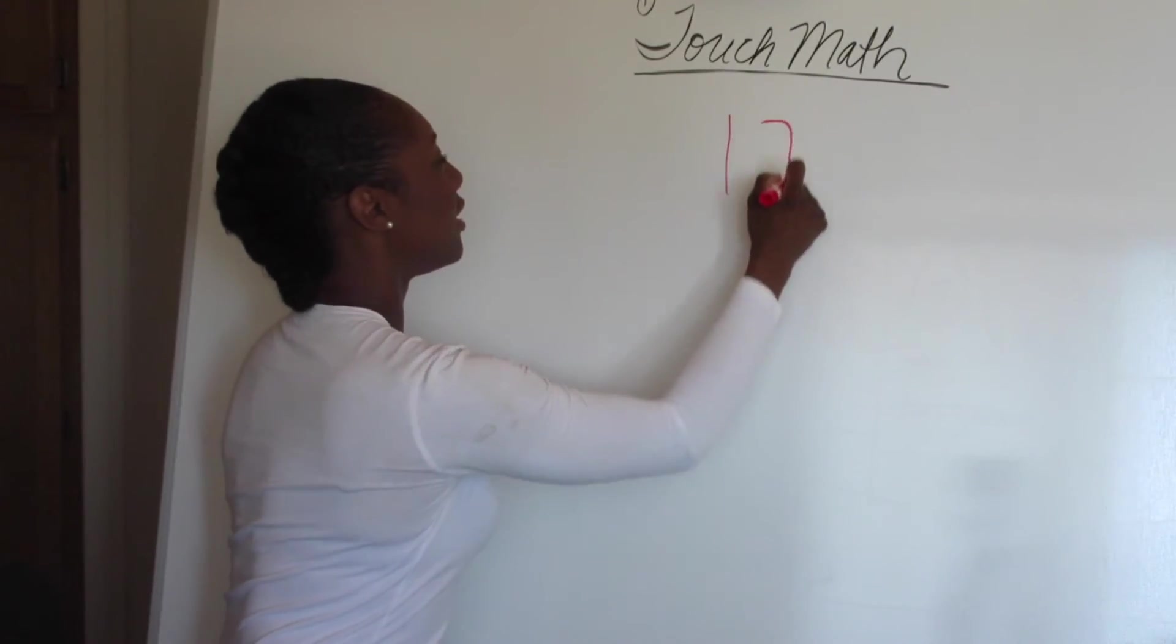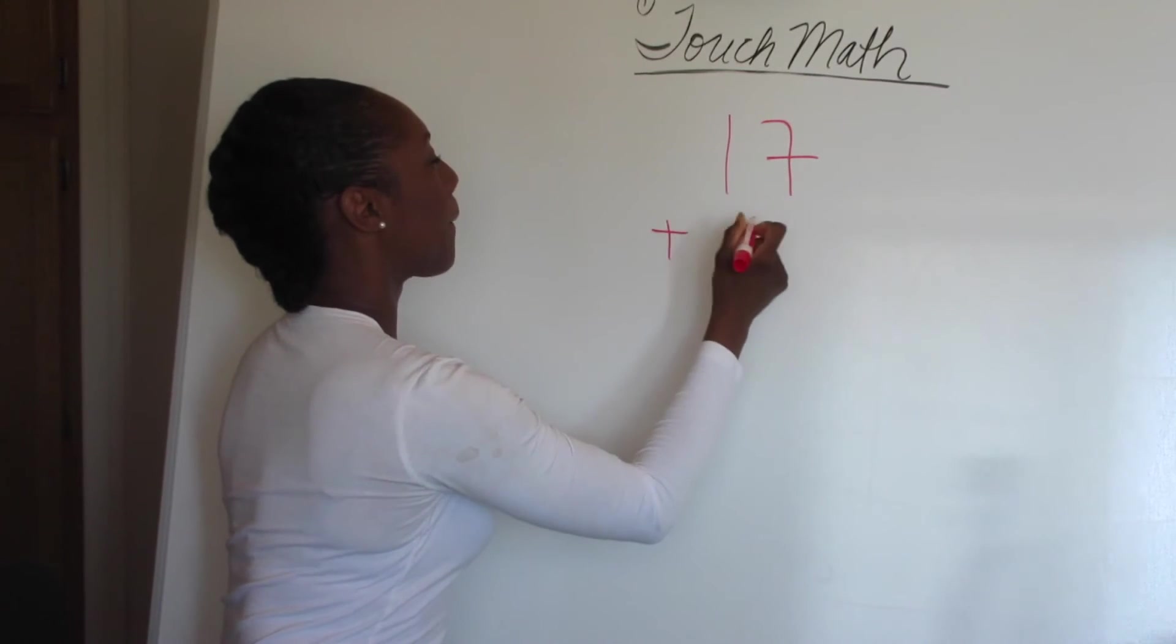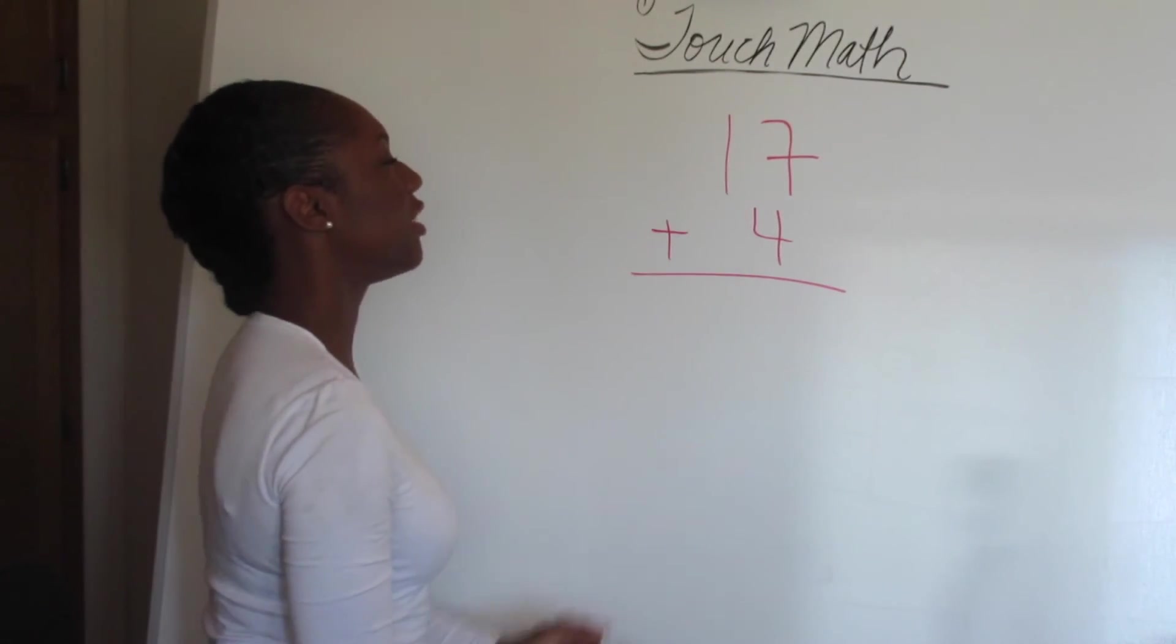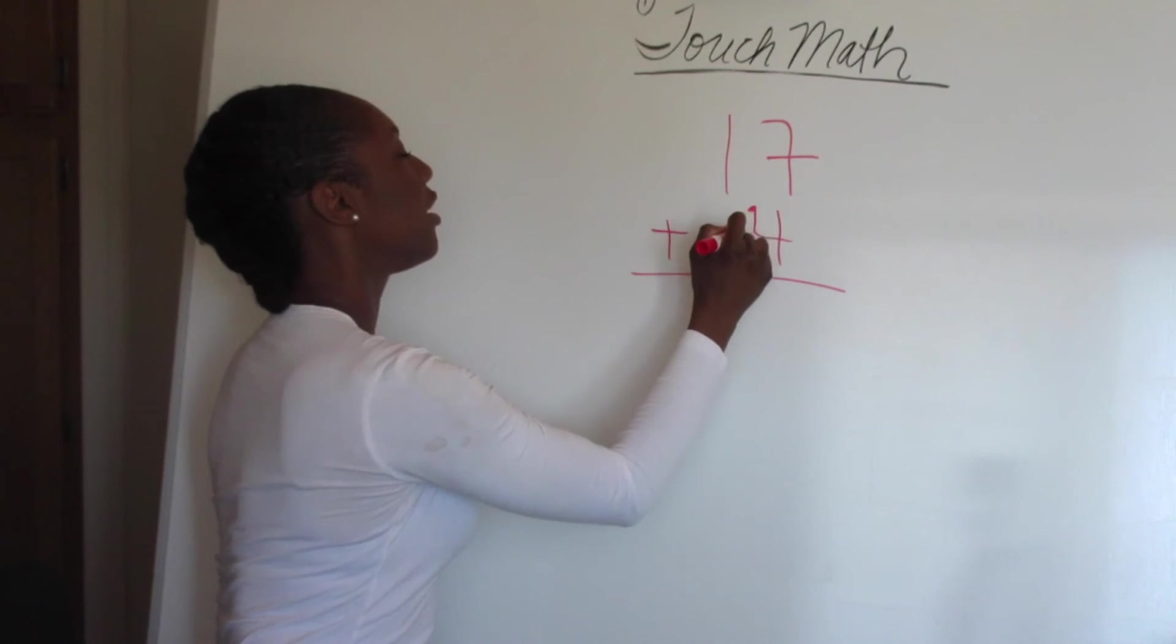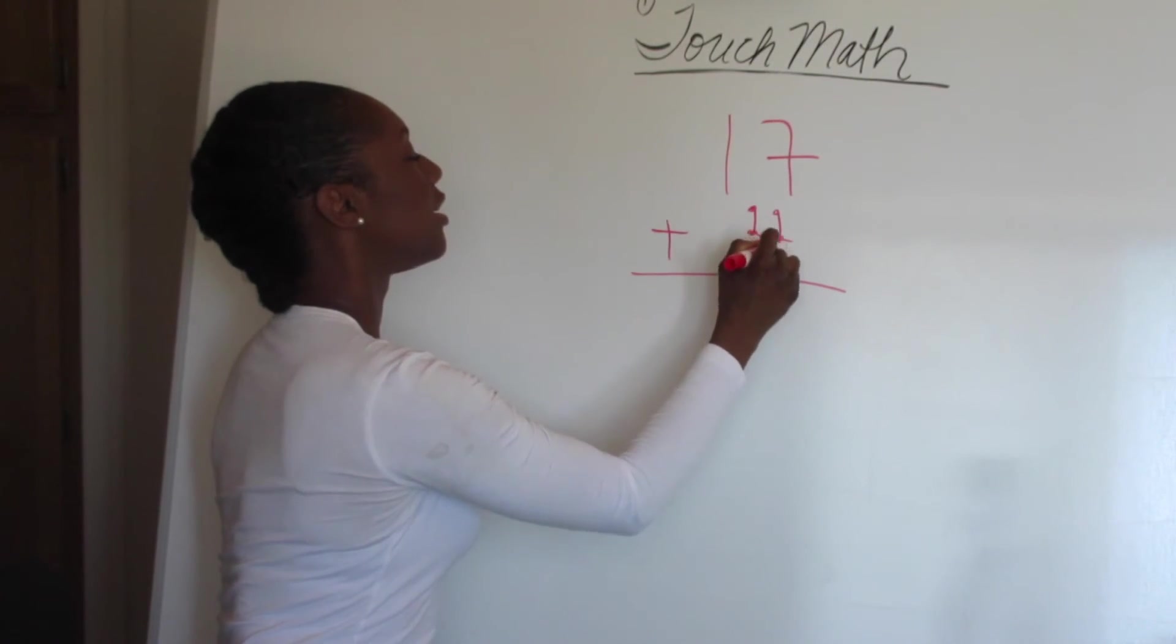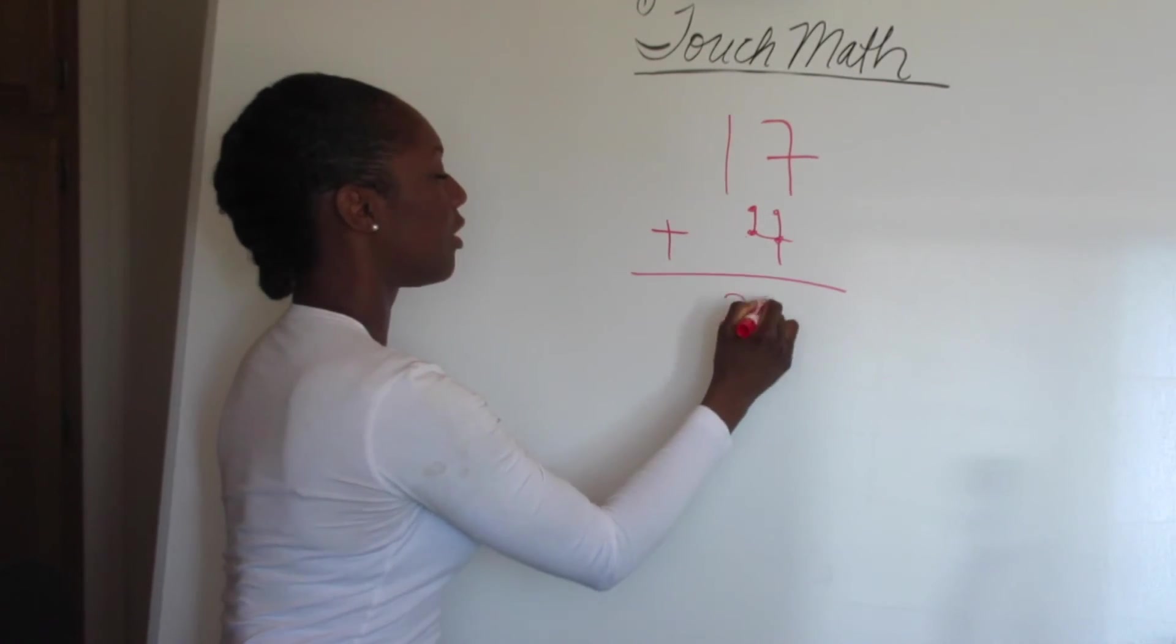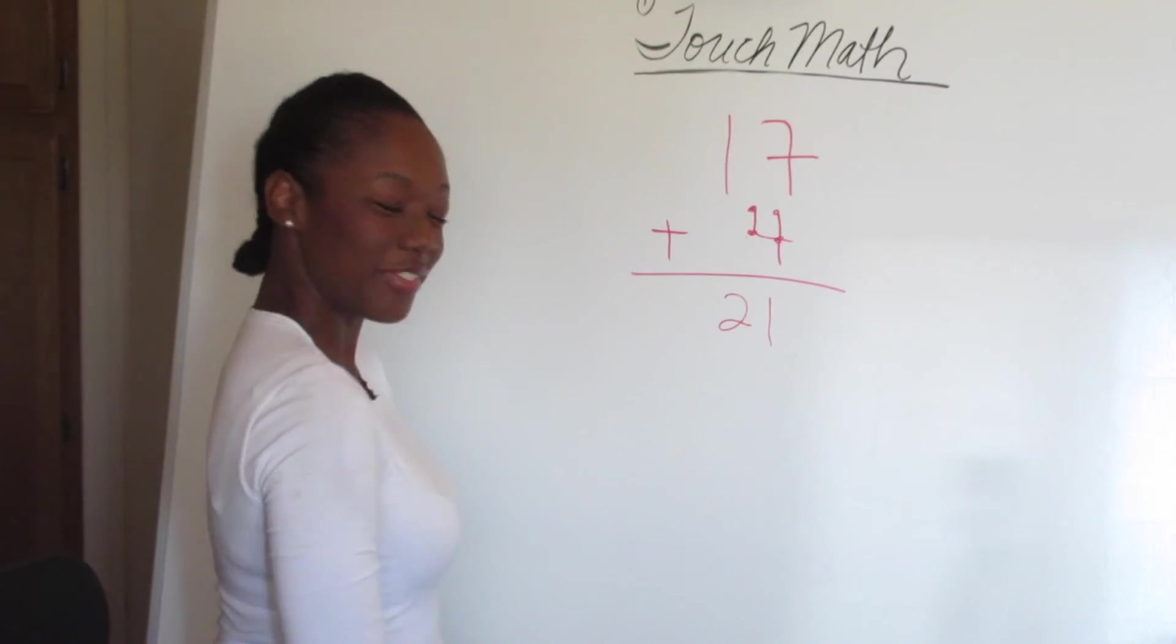Let's do seventeen plus four. You start with seventeen. You know that four has four dots. So you go seventeen, eighteen, nineteen, twenty, twenty-one. Done. Very simple, right?